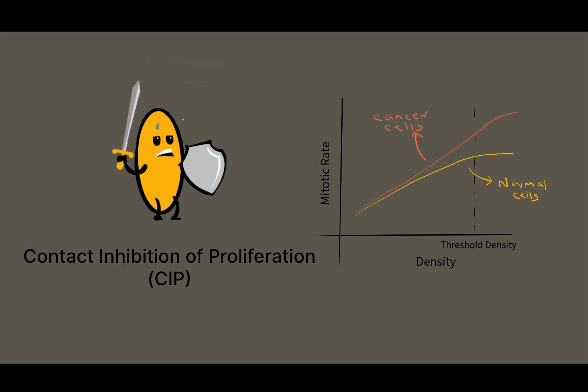However, when affected by cancer, CIP stops. Why does this happen? How can we retain CIP and use it to defend against epithelial cancer?